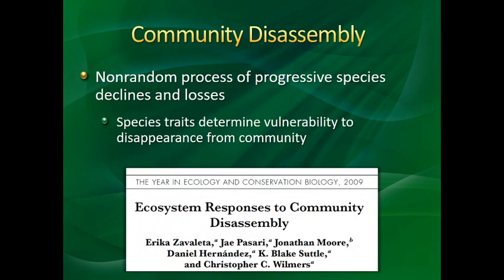Community disassembly is thinking about how a community basically falls apart as species are lost — the non-random process of progressive species declines and losses. Species traits determine the vulnerability of whether a species will disappear from the community. If you want to look at a really good paper about community disassembly, the Zavaleta paper looks at how the whole ecosystem responds to community disassembly.